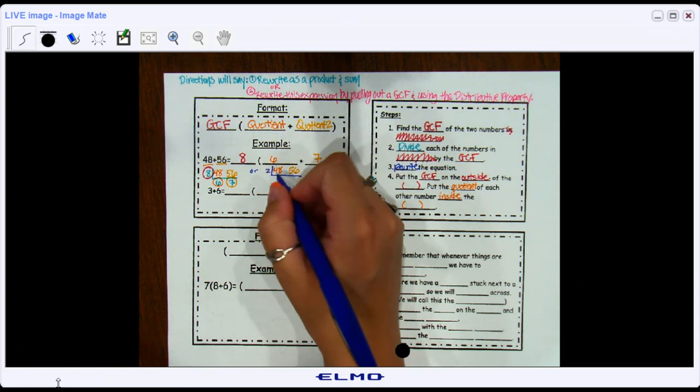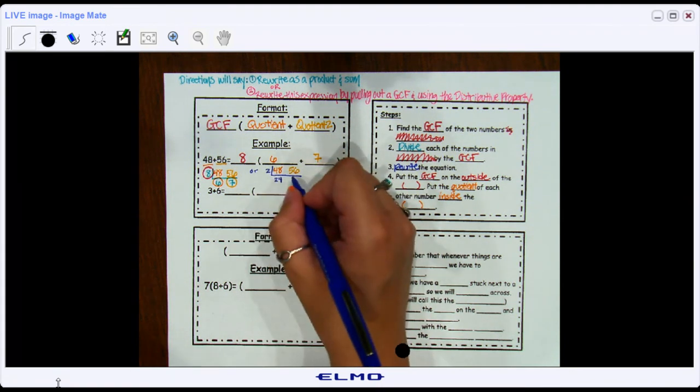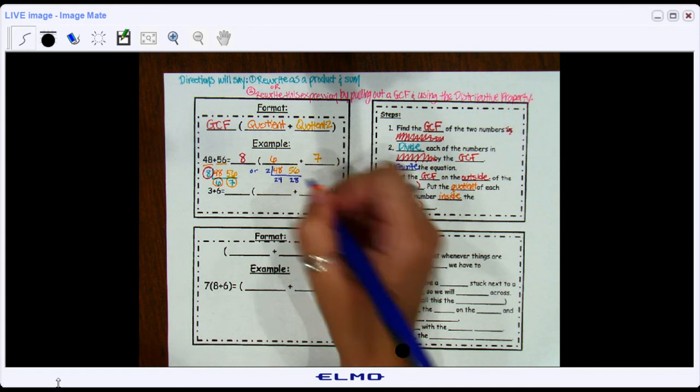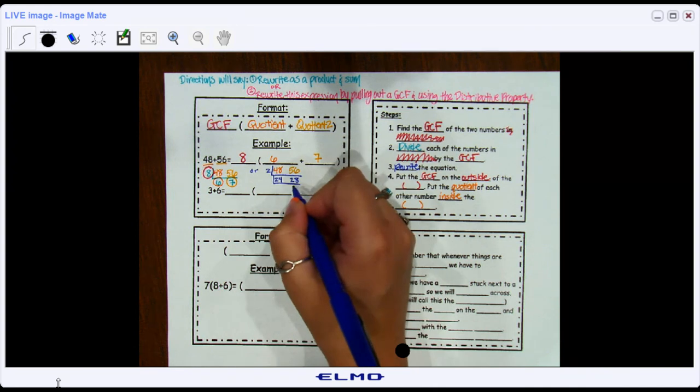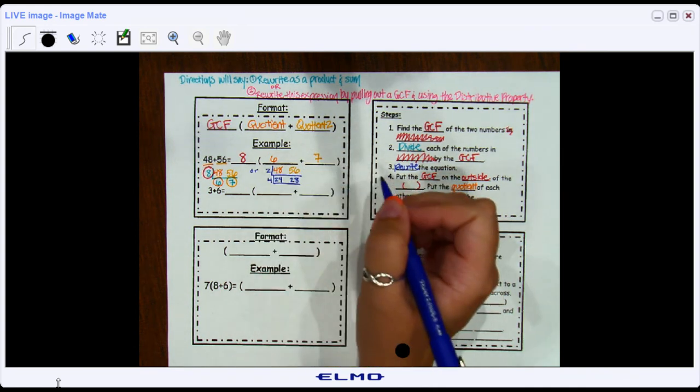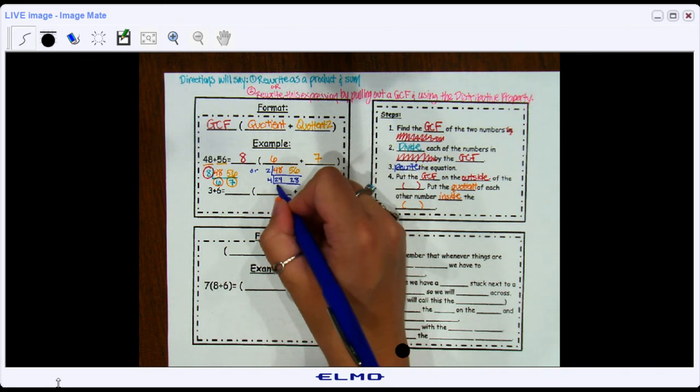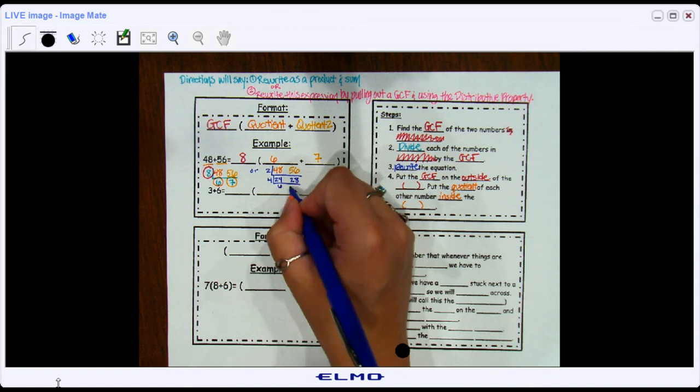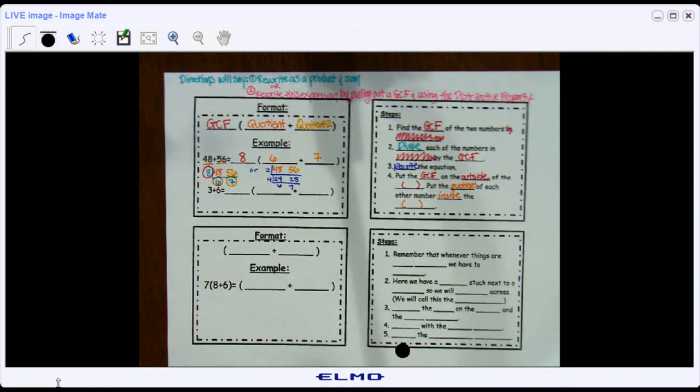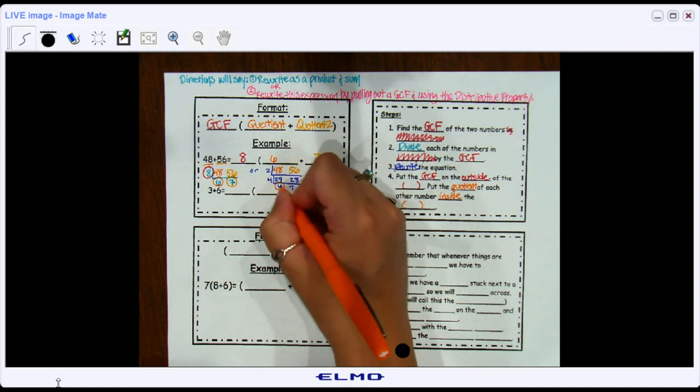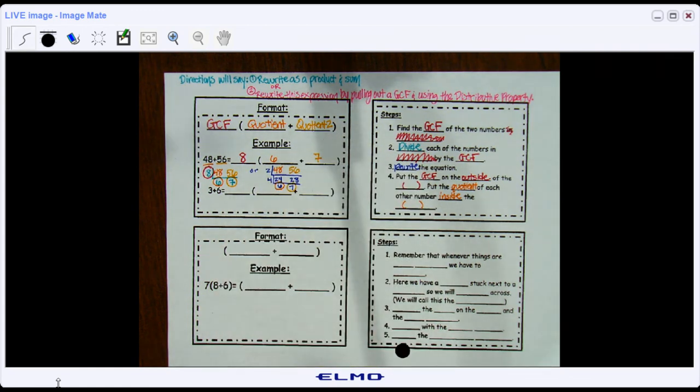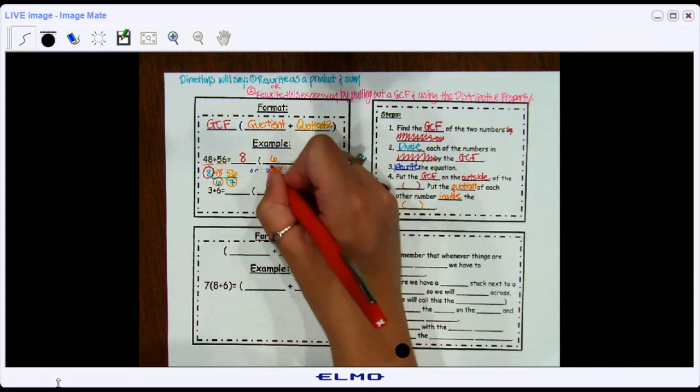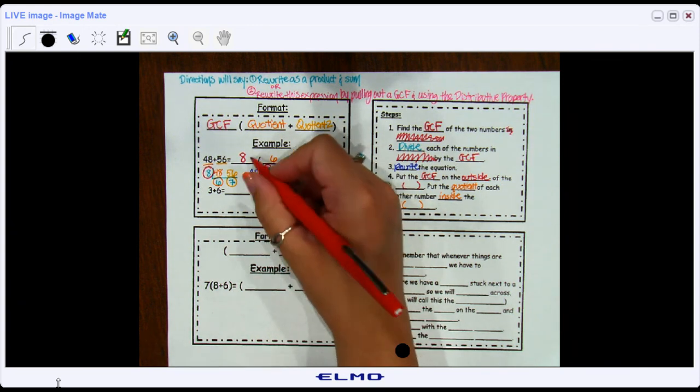Now I'm not done because 24 and 28 have a common factor. So I'd pull out another number and I see 4 as able to go into both of those. 4 times what is 24? A 6. And 4 times what is 28? A 7. I can't keep going. So this notice is the same number as here that went there, and the 7 is the same number that was here and goes there. And out in front, your GCF is still the same because 2 times 4 is still 8.